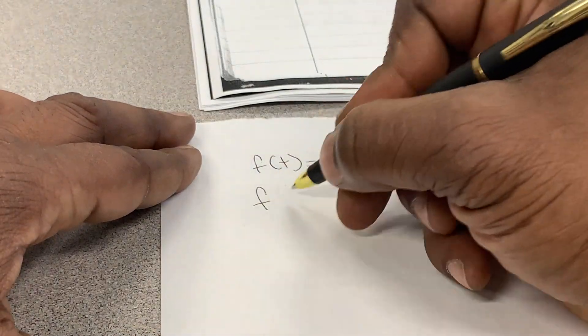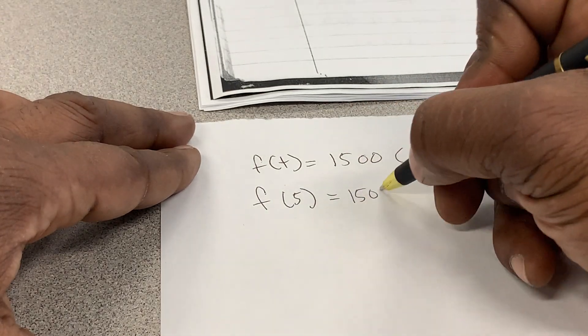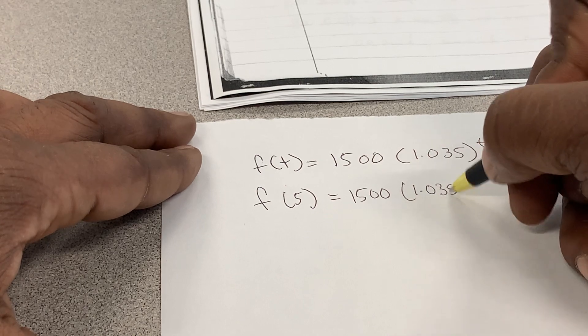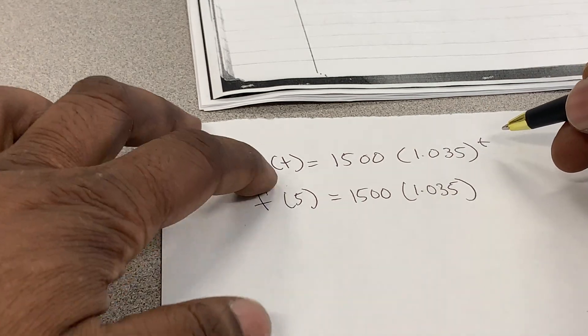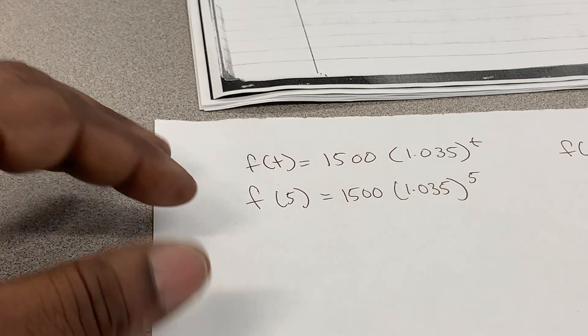So when I do that, I'm going to put f(5) = $1,500 × 1.035. You see how this t turned to 5 over here? This is going to become 5.